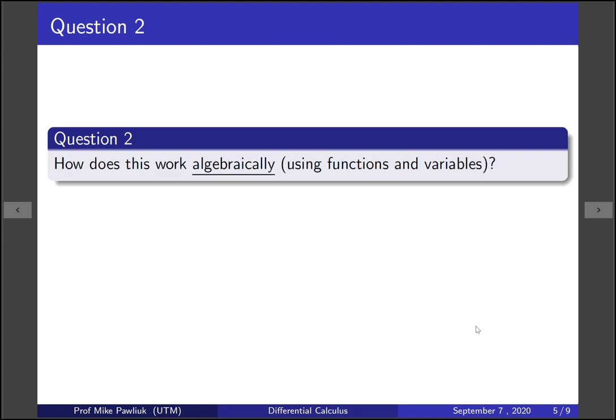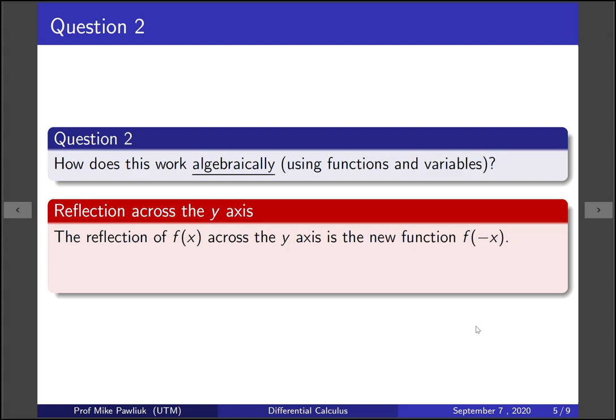Let's start with question two, since that will motivate question one. How does this work algebraically using symbols? A reflection across the y-axis can be described as follows: the reflection of f(x) across the y-axis is the function f(-x). This is the transformation 'reflect across the y-axis.'